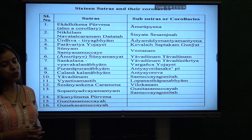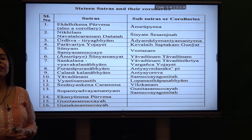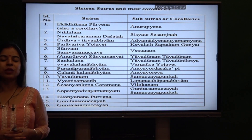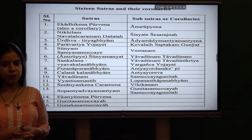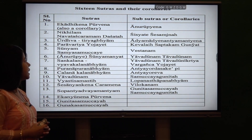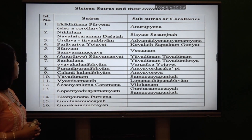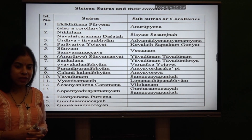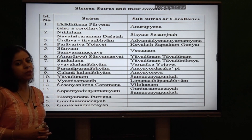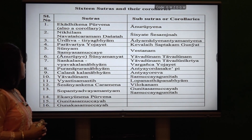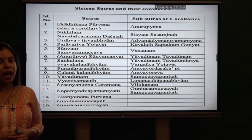These are the 16 Sutras and 13 Sub-Sutras, and some of them are as follows. The first is Ekadiken Purven, which means one more than the previous, used in addition, subtraction and multiplication. The second is the Nikhilam Sutra, which means all from 9 and last from 10. The third is Urt-Tiriak-Bhyam, meaning vertically and crosswise. The fourth is Paravartai-Yojayat, meaning transpose and apply. And Shunne-Sayam-Sammuchay, meaning the summation is equal to 0, and so on.